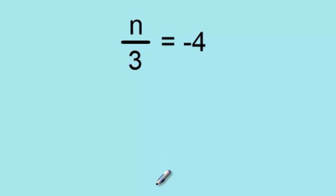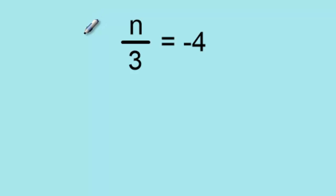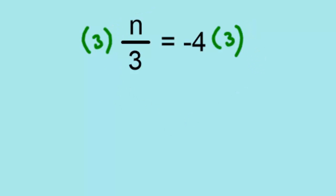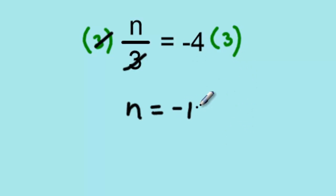For the second example, the variable n is being divided by 3. In order to get rid of that 3, we do the opposite operation on the left side, but also on the right side as well. Since it's being divided by 3, the opposite operation would be to multiply by 3. But whatever I do to one side, I must do to the other side as well. The 3's cancel, and I'm just left with n on the left side, and negative 4 multiplied by 3, which is negative 12 on the right side.